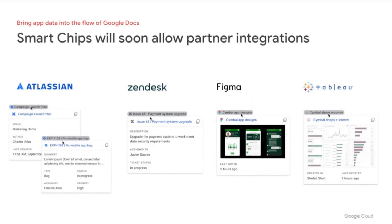Figma is using Smart Chips to embed critical information about design projects and collaborative brainstorming sessions, with a visual thumbnail so you can easily tell what you're clicking into. Tableau and Zendesk are two more partners leveraging Smart Chips, and we expect many more to follow.